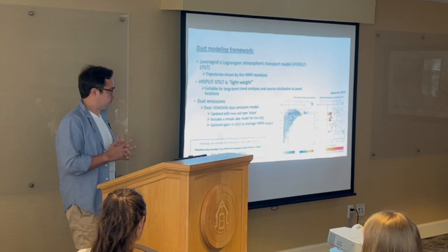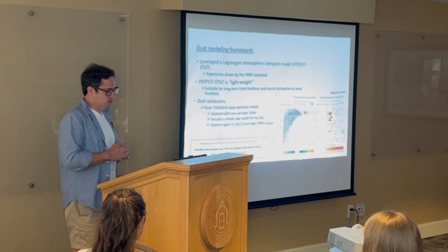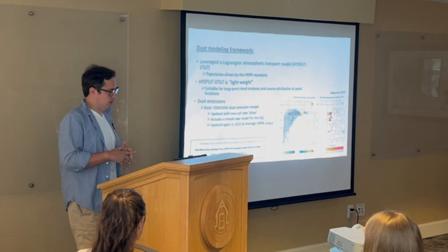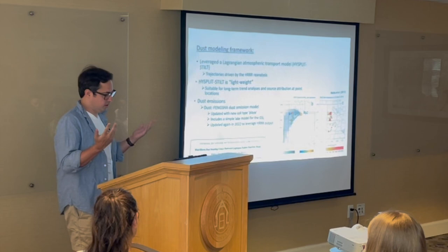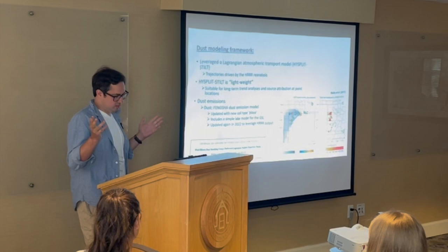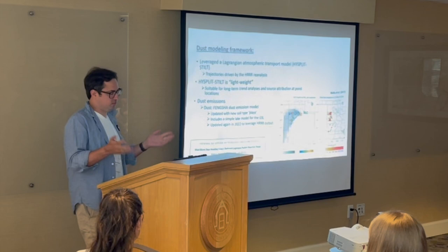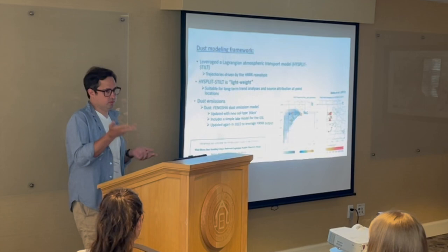This also includes a simple lake model for the Great Salt Lake where we adjust the lake's size, because the meteorological output usually doesn't represent it at the correct size. We adjust it using buoy data and a bathymetry dataset to increase or decrease the lake size — unfortunately in our case it's usually decreasing. To generate dust emissions, we use winds from the HRRR model, translate those into a friction velocity, and check if it exceeds the threshold needed to kick up dust.